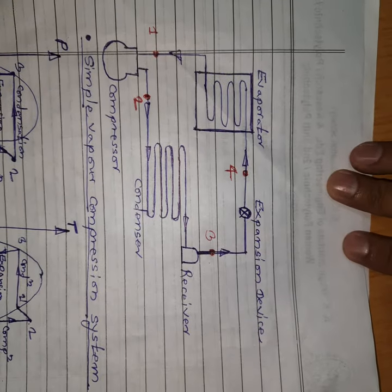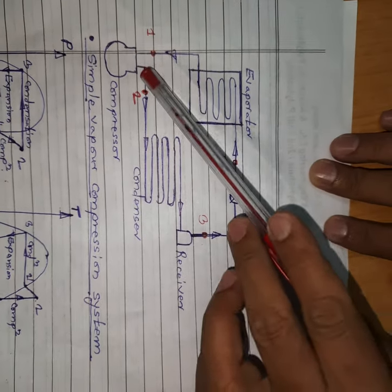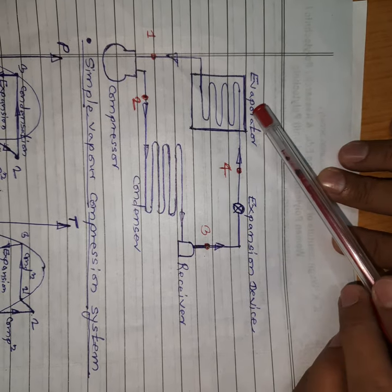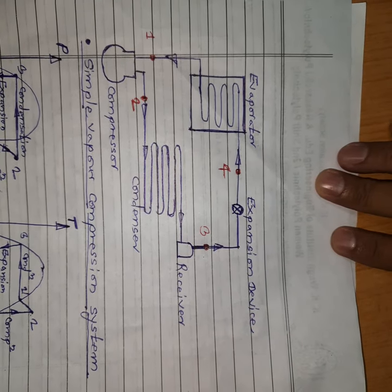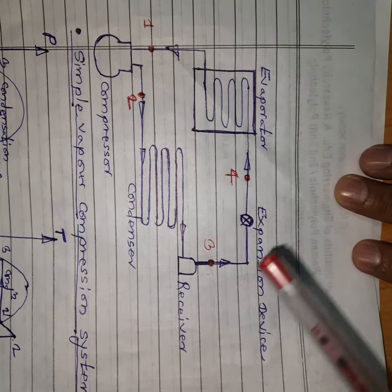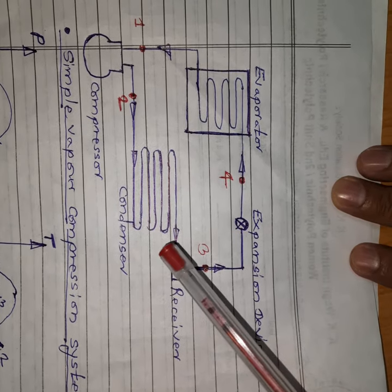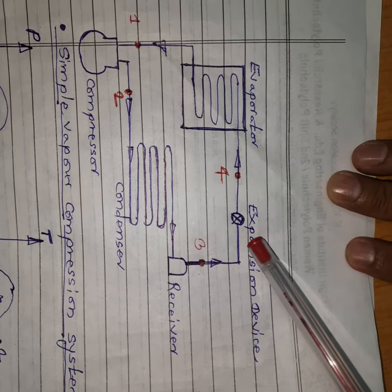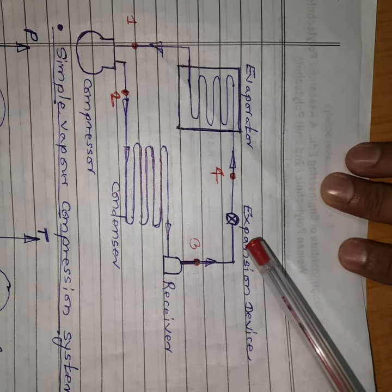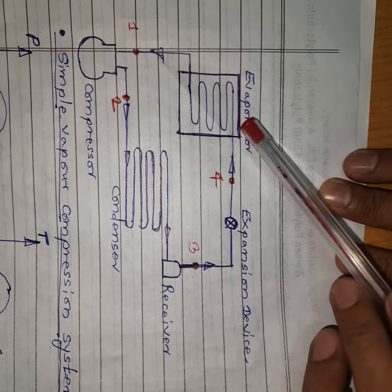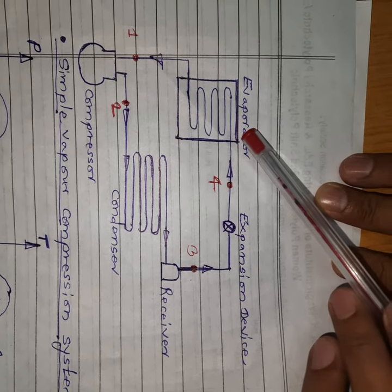Main components of the vapor compression refrigeration system are: compressor, condenser, expansion device, and evaporator. The function of the compressor is to compress the refrigerant vapor. The function of the condenser is to condense the refrigerant. The function of the expansion device is to expand the refrigerant. The function of the evaporator is to produce the cooling effect.